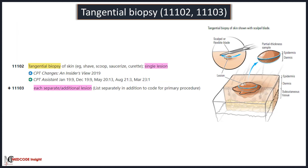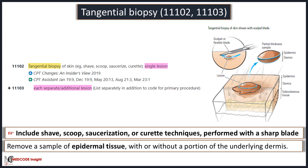Code 11102 is used for tangential biopsy of the skin for a single lesion. Add-on code 11103 is for each separate or additional lesion. Tangential biopsy includes shave, scope, saucerized, and curette techniques, and is performed with a sharp blade. It is used to remove a sample of epidermal tissue with or without a portion of underlying dermis.